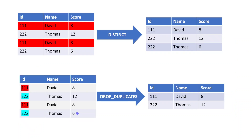To explain the difference, I've created some visual data. Let's say we have a dataframe with three columns — id, name, score — having four records. ID 111, David, score 8 appears twice with identical values, so it's a duplicate. ID 222, Thomas, score 12 and ID 222, Thomas, score 6 — here the last column differs, so when considering all columns together, these two are not duplicates.